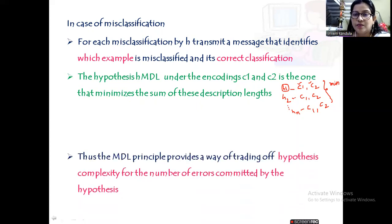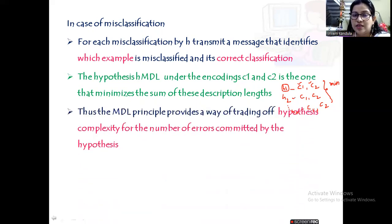So thereby what we can say: the MDL principle provides a trade-off of hypothesis complexity for the number of errors committed by the hypothesis. If your hypothesis is very short, then there is a possibility of committing less number of errors. We are using Occam's razor, taking only a shorter hypothesis for the MDL principle.